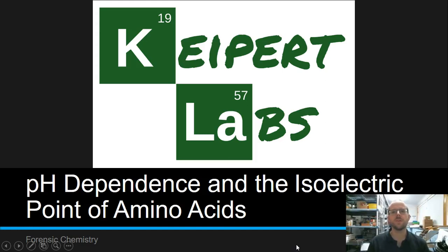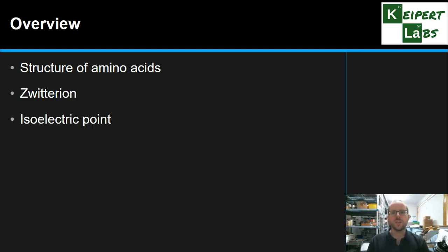Hi everyone and welcome to this episode of Kaiput Labs. In today's video we're going to be discussing pH dependence and the isoelectric point of amino acids. We're going to start by recapping the structure of amino acids, introduce this idea of the zwitterion particle, define what we mean by isoelectric point, see how it relates to and is dependent on pH, and think about it in the context of applying it to forensic science.